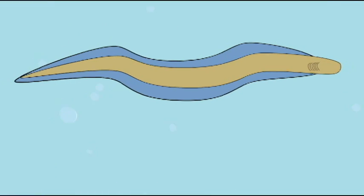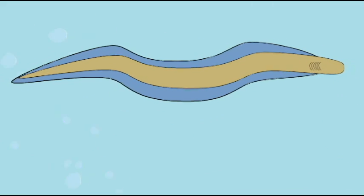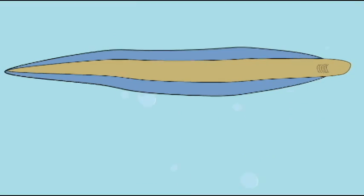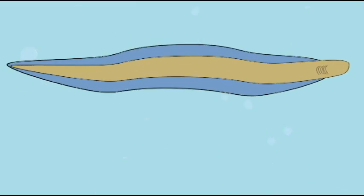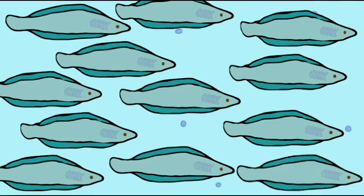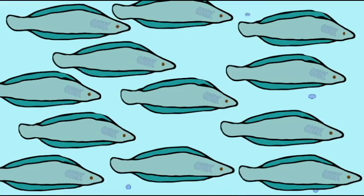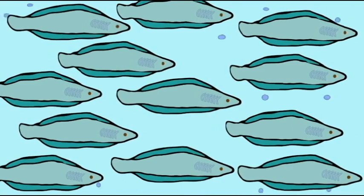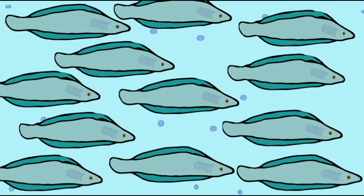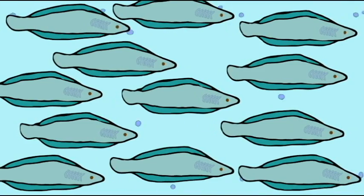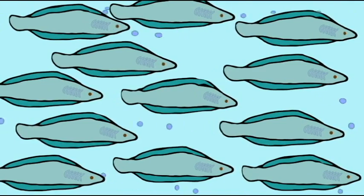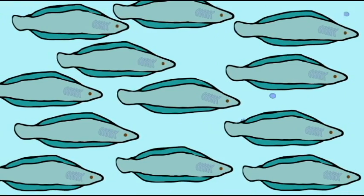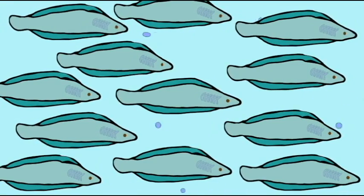In the early Cambrian, there existed a number of chordates — invertebrates which had some features of fish. The first fish are also known from the Cambrian period. They were an inch or two long, very simple, with no jaws, no bone, and no paired fins, so they were very similar to the invertebrate chordates. No modern types of fish are known from the early Cambrian.